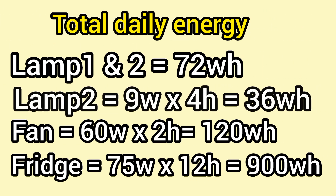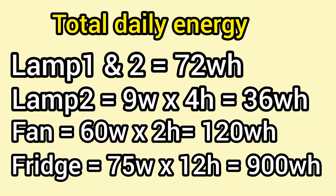Let's do the calculations. Lamp one: 9 watts multiplied by 4 hours gives us 36 watt-hours. Lamp two is also 9 watts used for four hours, giving another 36 watt-hours. The fan is rated 60 watts used for two hours, giving 120 watt-hours. The refrigerator is 75 watts used for 12 hours, giving a total of 900 watt-hours. The compressor doesn't run the full 24 hours because of the thermostat — it cuts and starts again.